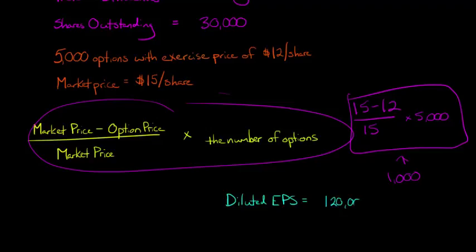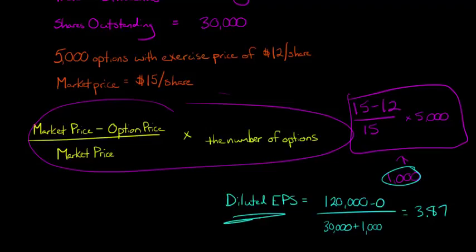We've got 120,000 net income, minus zero for preferred dividends, and then in the denominator we have the 30,000 weighted average common shares outstanding, but then we add in the 1,000. That's what the effect here is of the diluted earnings per share, the people we assume convert. And we assume they converted as of January 1st of the year, and assuming that, we have diluted earnings per share of $3.87.